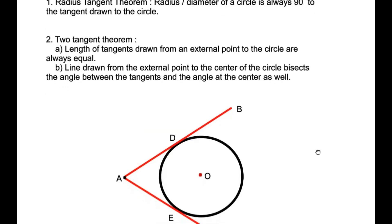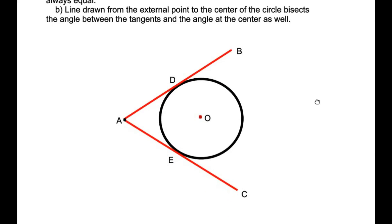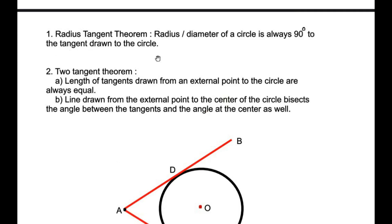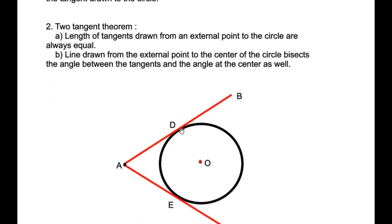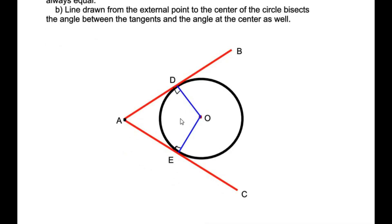I have drawn a circle with A acting as an external point, through which two lines are drawn as tangents to the circle. According to the theorem, the radius drawn from the center of the circle to the point of tangency is always 90 degrees. So if you draw a line from the center to any point on the tangent, the radius makes 90 degrees with the tangent.